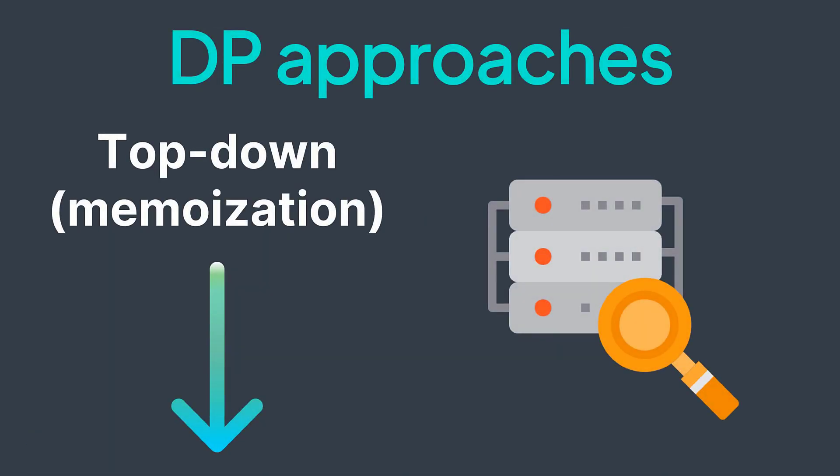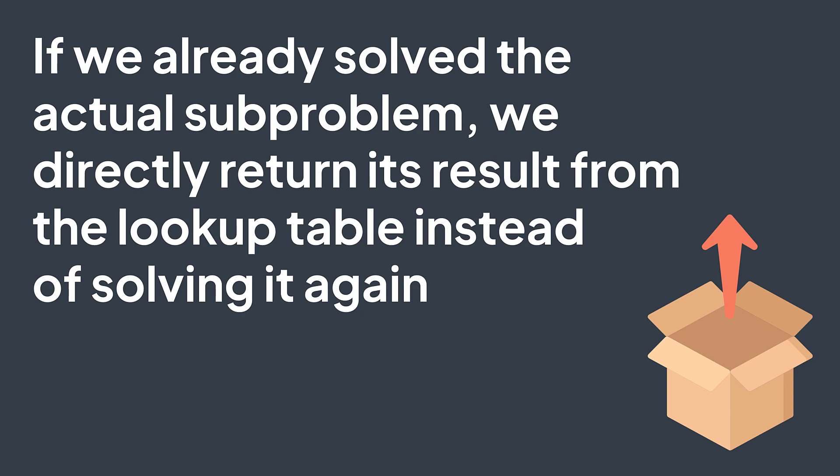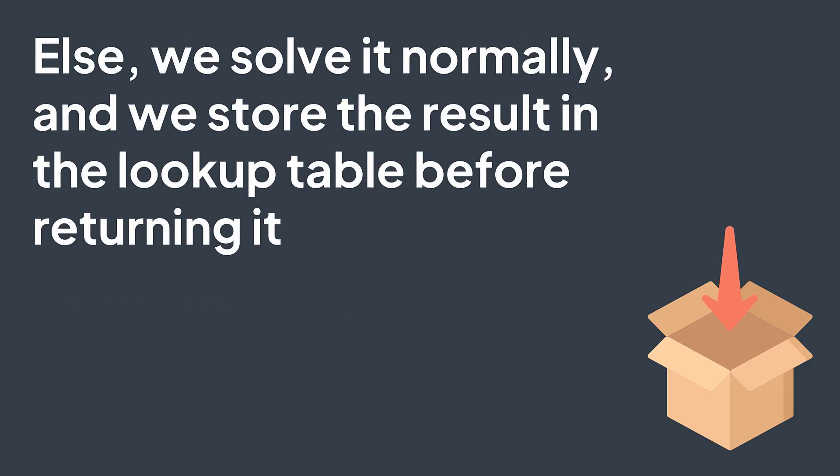The top-down approach keeps the same recursive solution, but uses a lookup table where it stores the result of each subproblem, so that the next time we need it, we just retrieve the result without doing all the work again. This means that when entering a recursive call, we first check if we already solved the current subproblem by checking the lookup table. If it's there, we return the stored value; otherwise, we work normally, but before returning the result we first store it in the lookup table, then return.